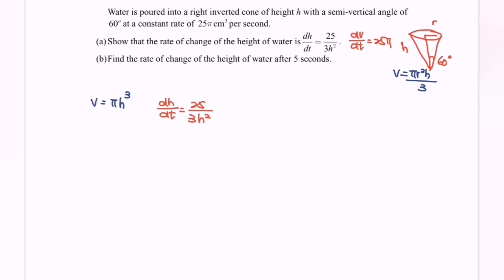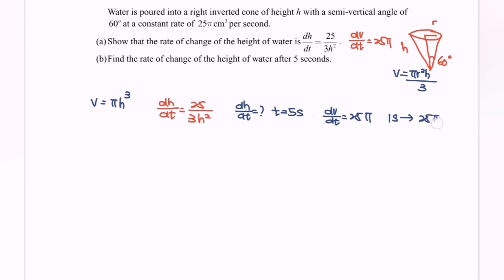Part B: Find the rate of change of the height of the water after 5 seconds. We are looking for dh/dt when t equals 5 seconds. Since dV/dt equals 25π, meaning 1 second fills 25π cm³, at 5 seconds the volume will be 25π multiplied by 5, so the volume equals 125π cm³.